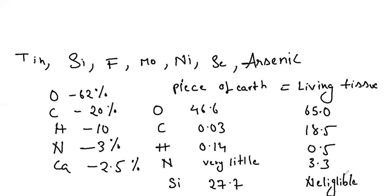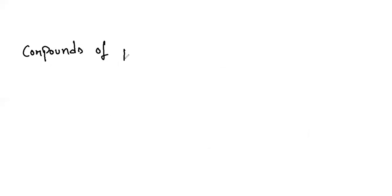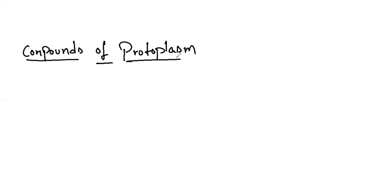Oxygen, carbon, hydrogen, and nitrogen have a higher importance and are present in greater numbers in living tissue. Now let's see the compounds of protoplasm. Although some elements occur in protoplasm as free ions, almost two or more elements are variously combined to form different kinds of compounds.